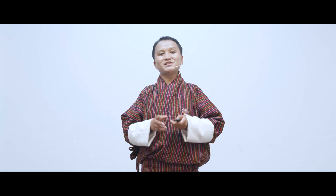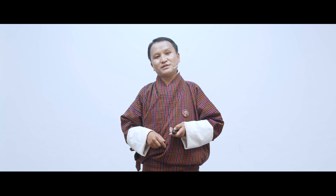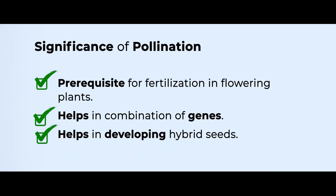Let us look at the significance of pollination. For plants, unlike animals, pollination is a prerequisite for fertilization. Second, it helps in combining genes — when genes are combined the offspring becomes more viable. Third, it helps to mix genes between different plants and aids in developing hybrid seeds. There are other significances as well which you may explore further.